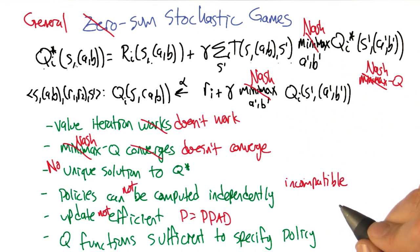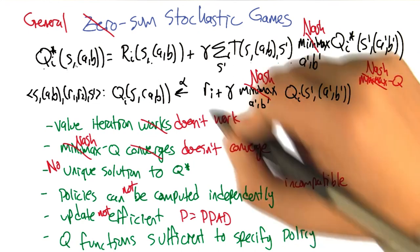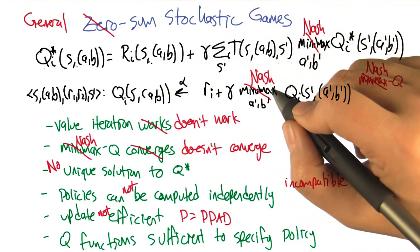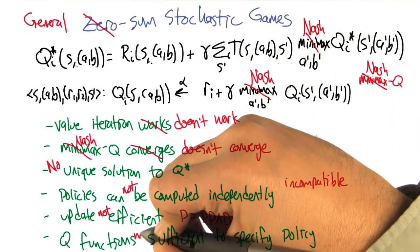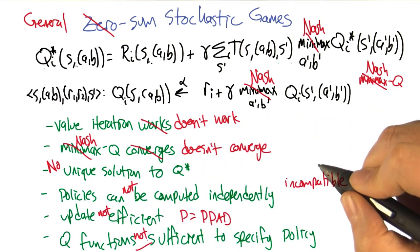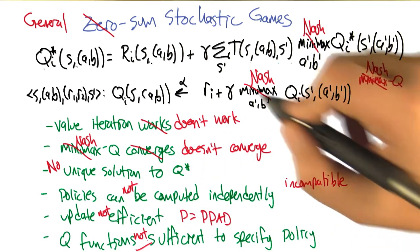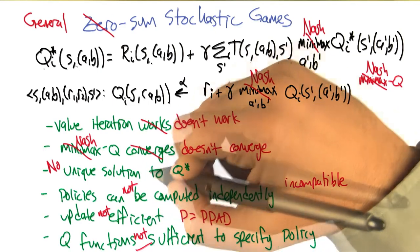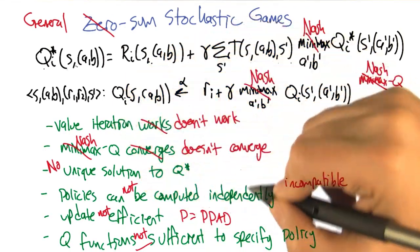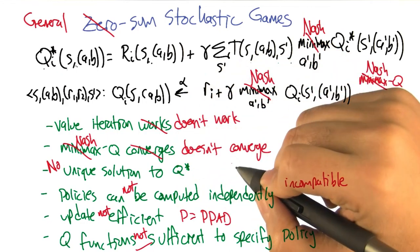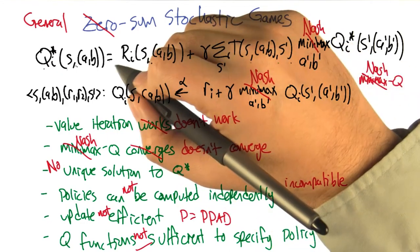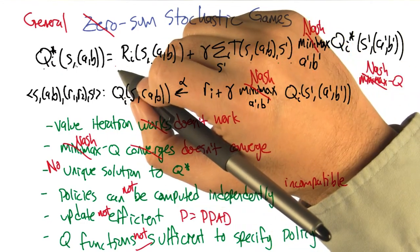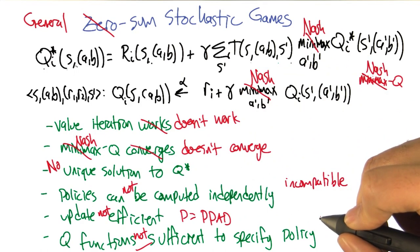And finally, the last little hope of, well maybe we can define this kind of learning scenario using Q functions the same way we've been doing. Q functions are not sufficient to specify the policy. That is to say, even if I could do all these other things, efficiently compute a solution, build the Q values, make them so that they're compatible with each other, and now I just tell you here's your Q function, now decide how to behave, you can't. There's not enough information.